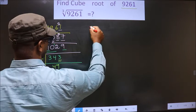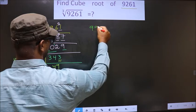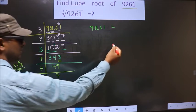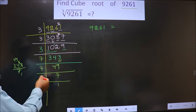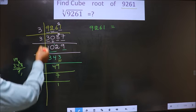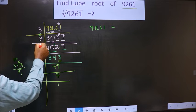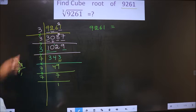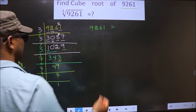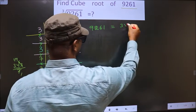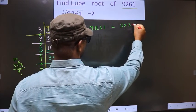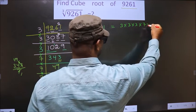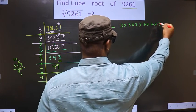49 is nothing but 7 times 7. Since 7 is a prime number, we take 7 and 1. So 9261 is equal to the product: 3 times 3 times 3 times 7 times 7 times 7.